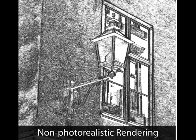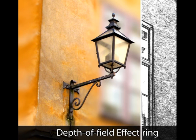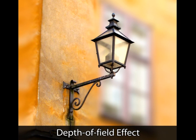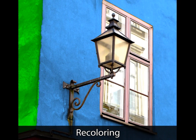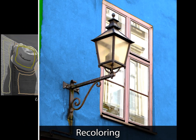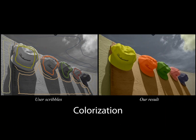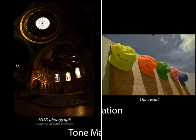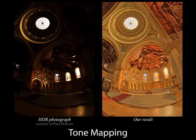By assessing the pixel neighborhoods in the transformed domain, we can also generate non-photorealistic rendering effects resembling pencil drawings. Using a depth map, we can simulate depth-of-field effects, thus focusing attention on foreground objects. With user interaction, we can perform edge-aware recoloring of image regions. A similar approach can be used to add color to grayscale images. Finally, we can also perform real-time tone mapping of high dynamic range images.